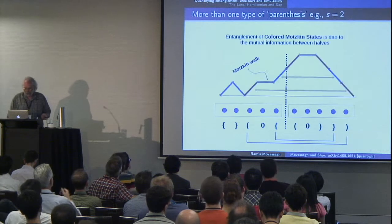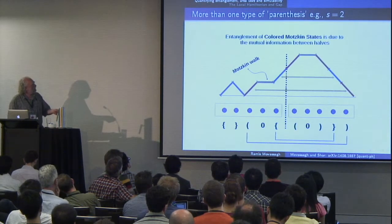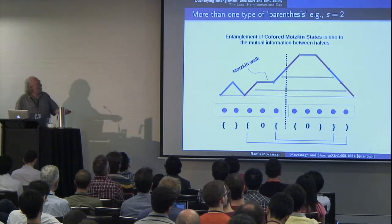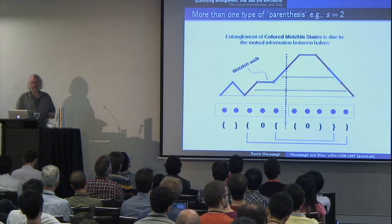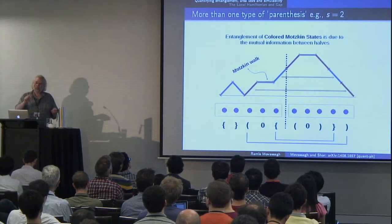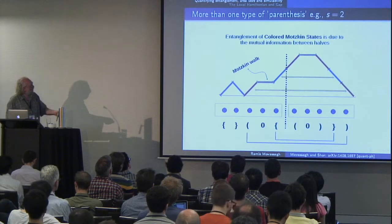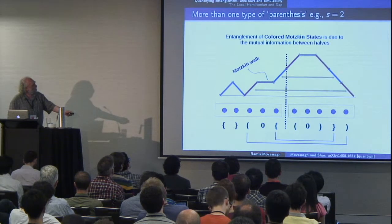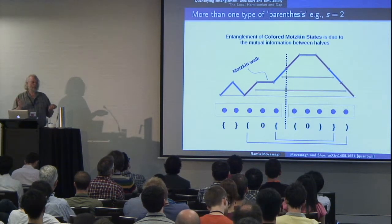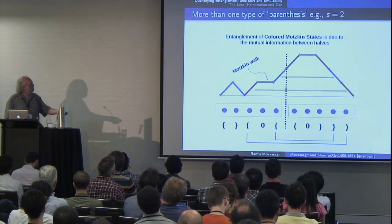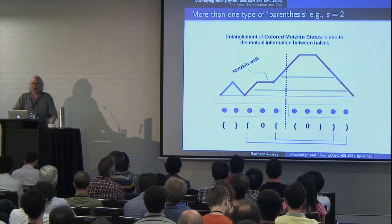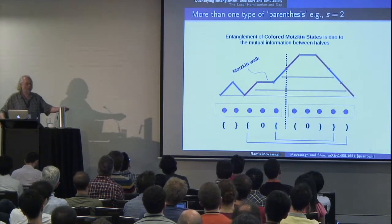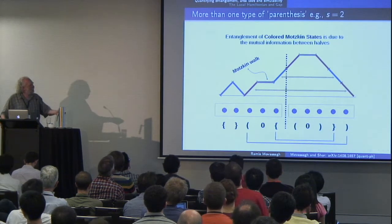Now suppose we have two types of parentheses to match — it's exactly the same as a colored Motzkin walk, where the steps up are either blue or red, and a red step up is matched by a red step down. Instead of just the number of steps, you get the sequence of steps. The number of bits communicated across is the height of this walk, and since random walks behave like Brownian motion, the height is √n, giving √n entanglement between the left and right halves.